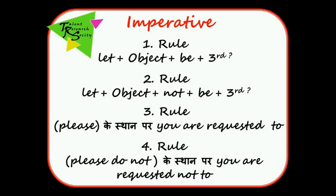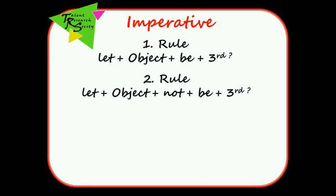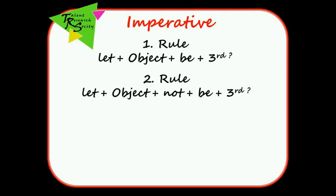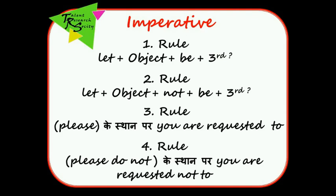Rule of imperative: Rule 1 — Let plus object plus BE plus third form. Rule 2 — Let plus object plus NOT plus BE plus third form. Rule 3 — For 'please' sentences: You are requested to [verb]. Rule 4 — For 'please don't' sentences: You are requested not to [verb].